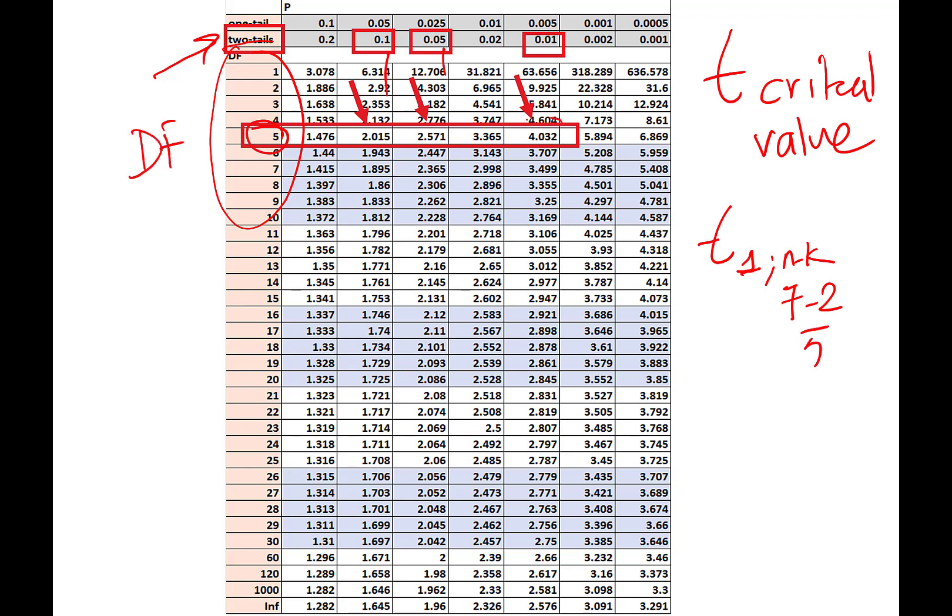You are looking for a t-critical value of 4.032 for one percent (0.01). For 5% it's 2.57, and for 10% statistical significance it is 2.015.